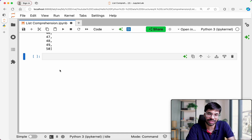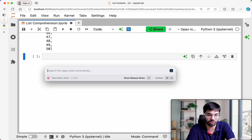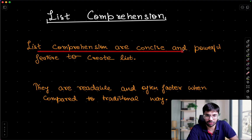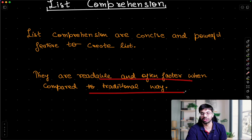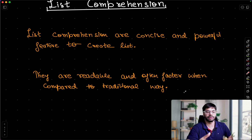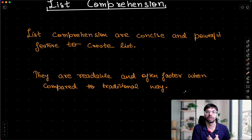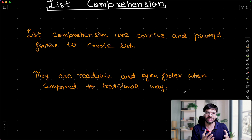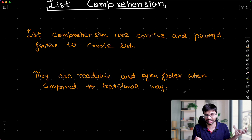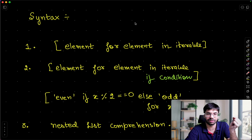List comprehension is an easy and concise way of making your list. They are readable and often faster when compared to the traditional way. The reason it is faster is because CPython is actually written on top of C++, and list comprehension uses C++ in the backend. So normally it is a little bit faster than the traditional way. That is the reason you will see at lots of places that lists are created using the list comprehension concept.